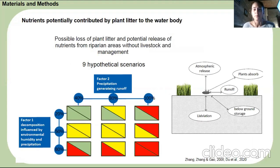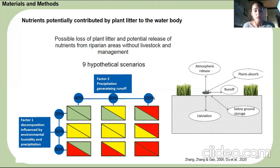What happens if the litter decomposes? We created nine hypothetical scenarios to estimate the possible loss of nutrients due to plant litter decomposition from unmanaged buffer zones. All biological, physical, and chemical processes taking place during decomposition were ignored, which is why these scenarios are hypothetical and do not represent reality. In these nine scenarios, we combined different environmental conditions affecting: factor one — the decomposition of grasses — and factor two — the subsequent flux of nutrients released to the water body.